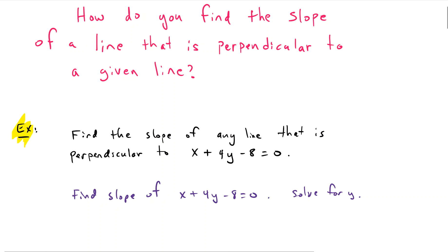It says find the slope of any line that is perpendicular to x plus 4y minus 8 equals 0. And by the way, if you hear a little baby noise in the background, that's my 3-month-old Jude.